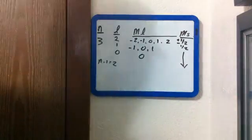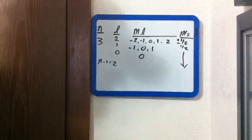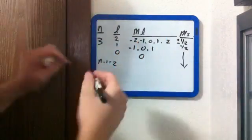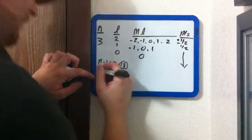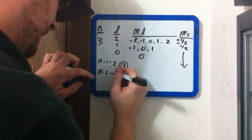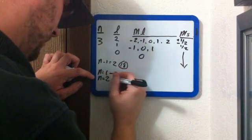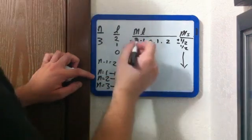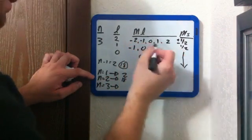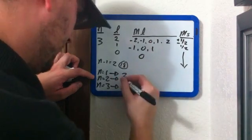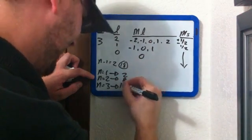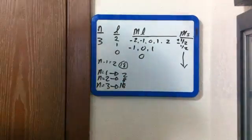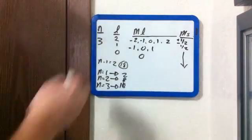So how many electrons do we have here? I've got two here, six there for eight, then two, four, six, eight, ten — a total of 18. So n equals one gives me two, n equals two gives me eight, n equals three gives me 18. Let's just keep working our way down and take a look at n equals four.